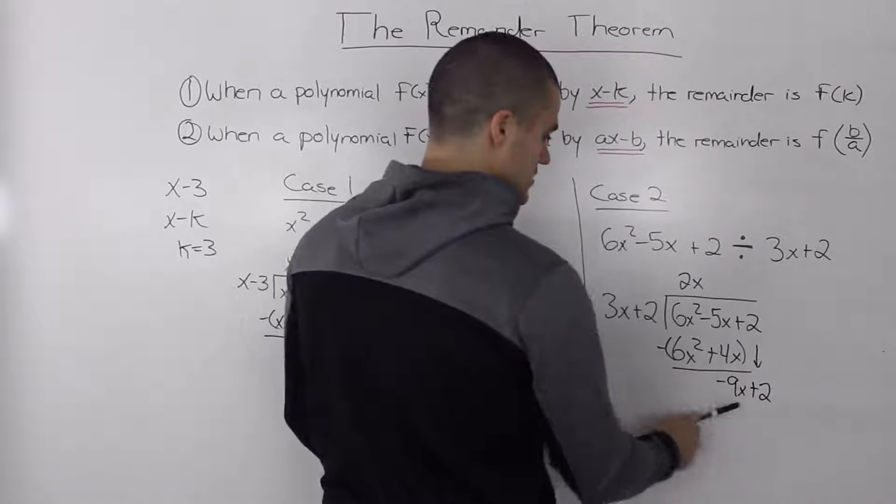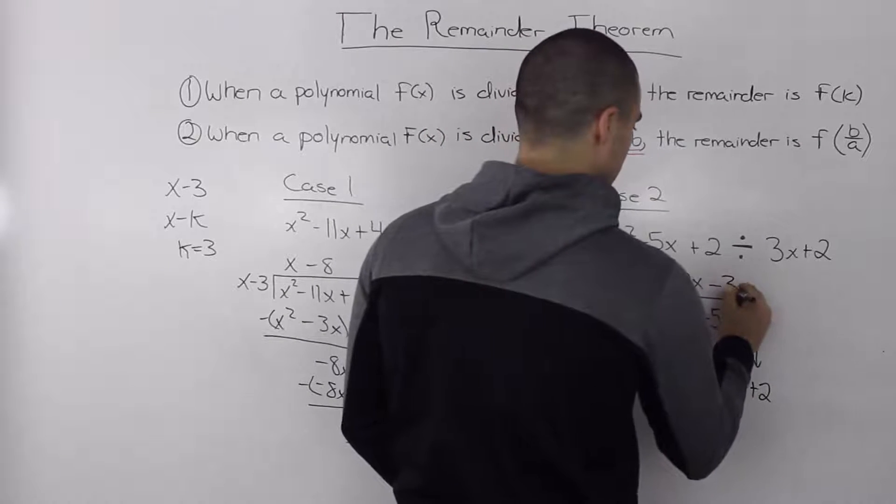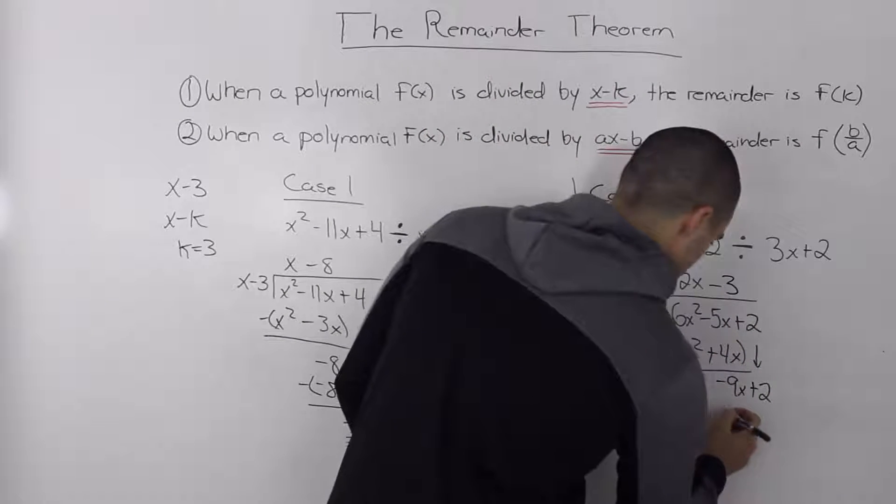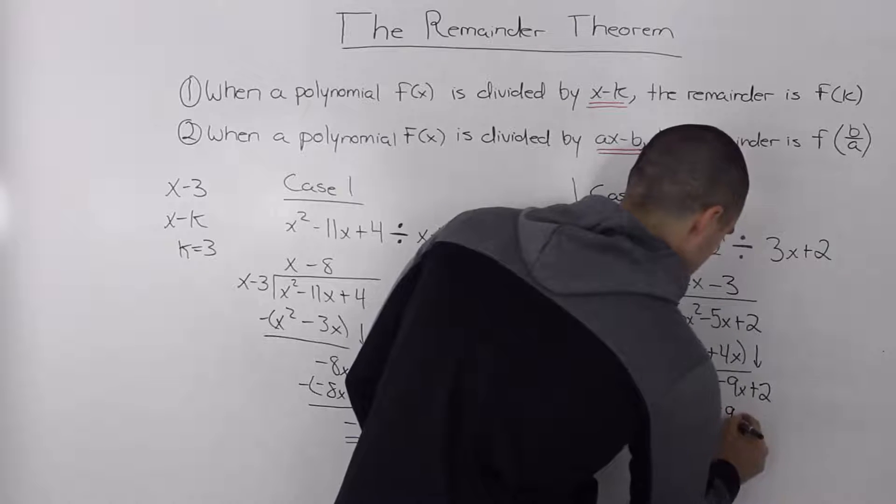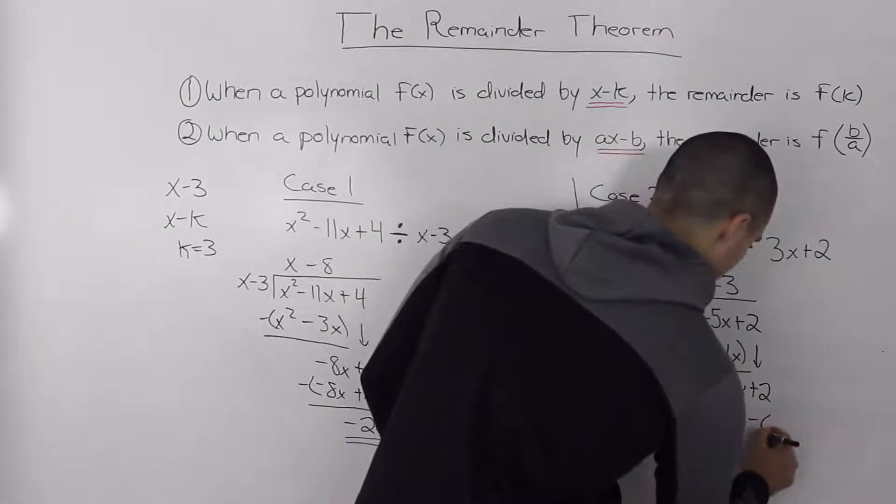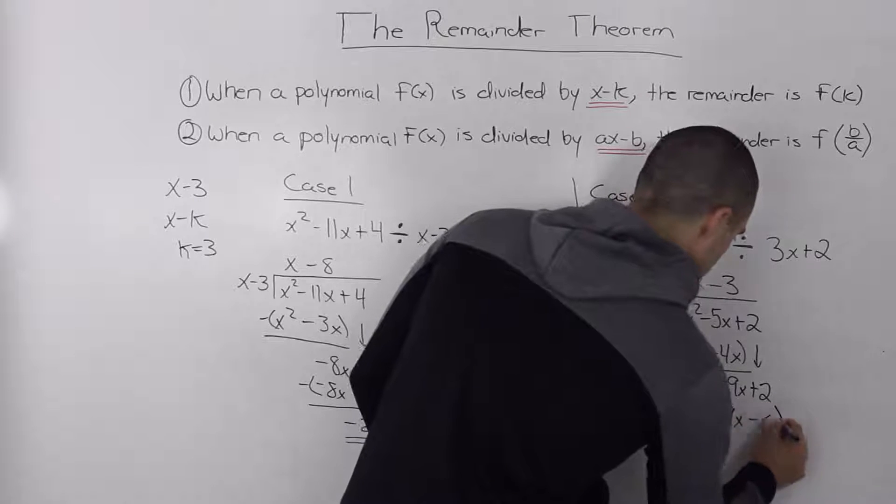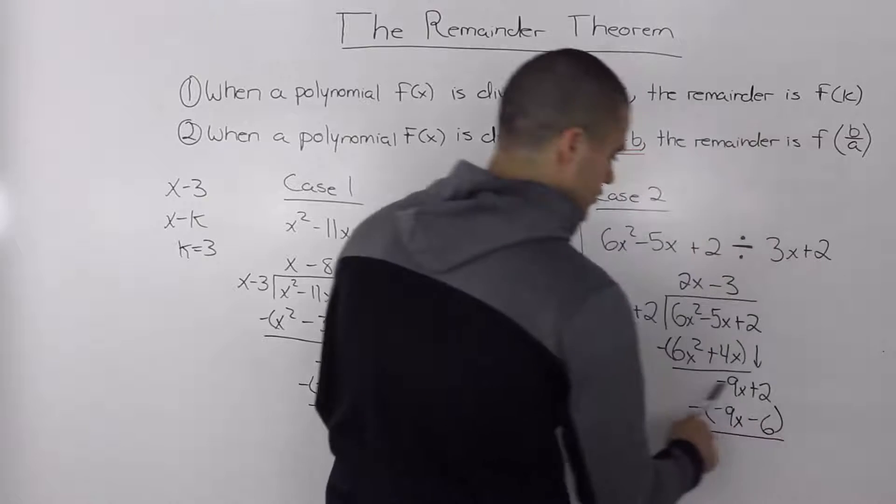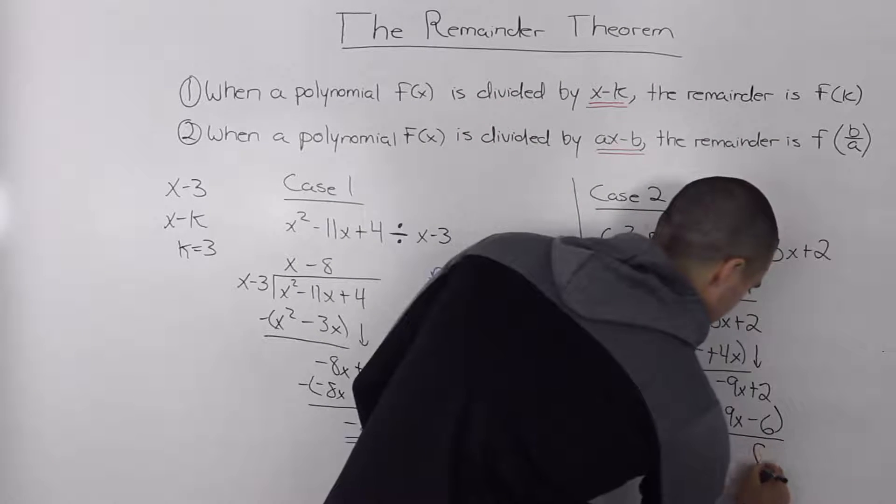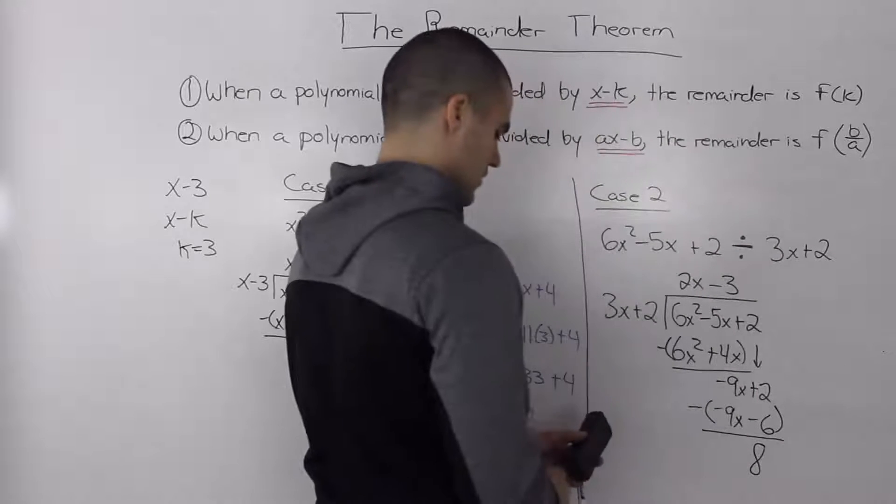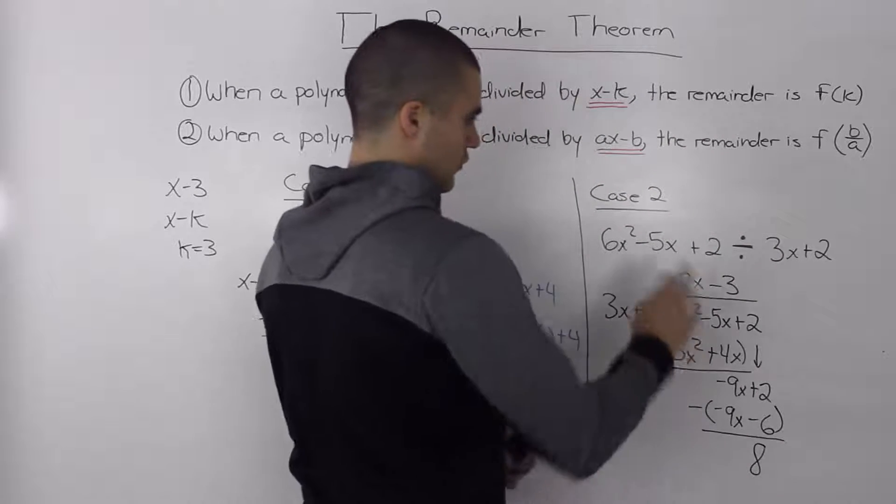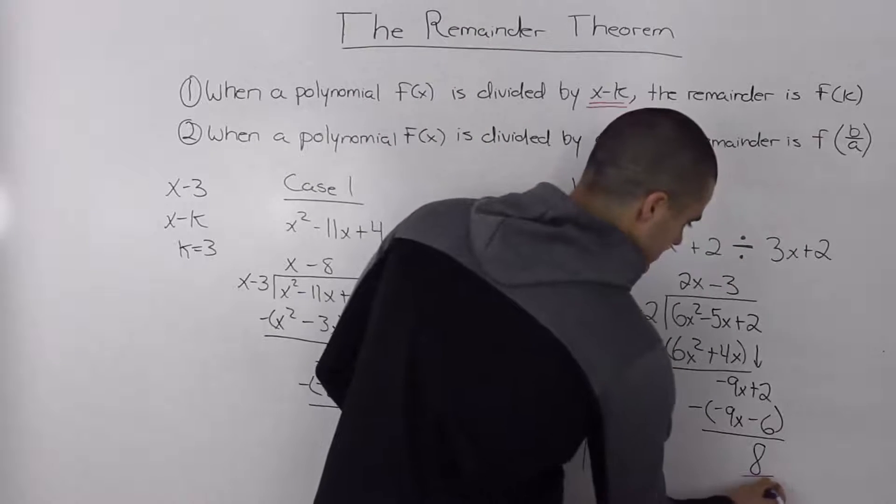How many times does 3x go into negative 9x? Negative 3 times. So negative 3 times 3x is negative 9x. And then negative 3 times 2 is negative 6. So when we subtract these, 2 minus negative 6 is 8. So our remainder for this division here is 8.